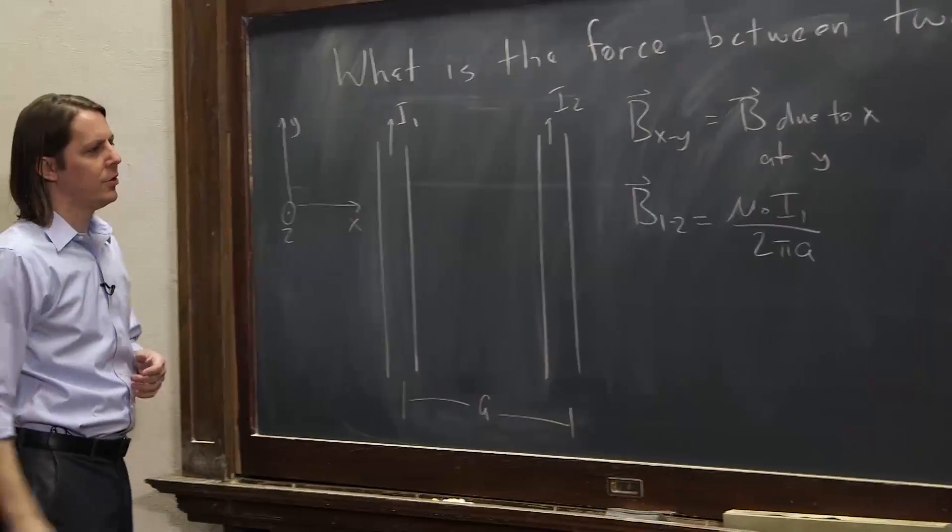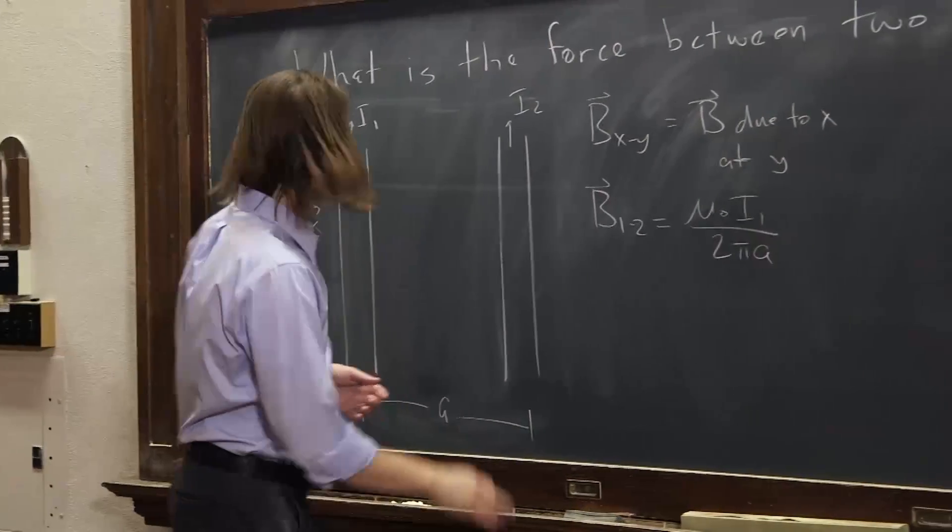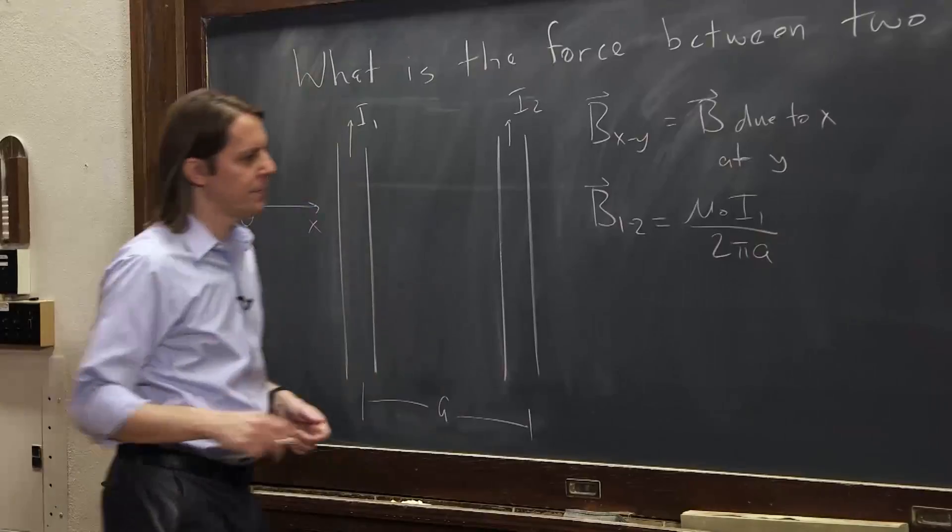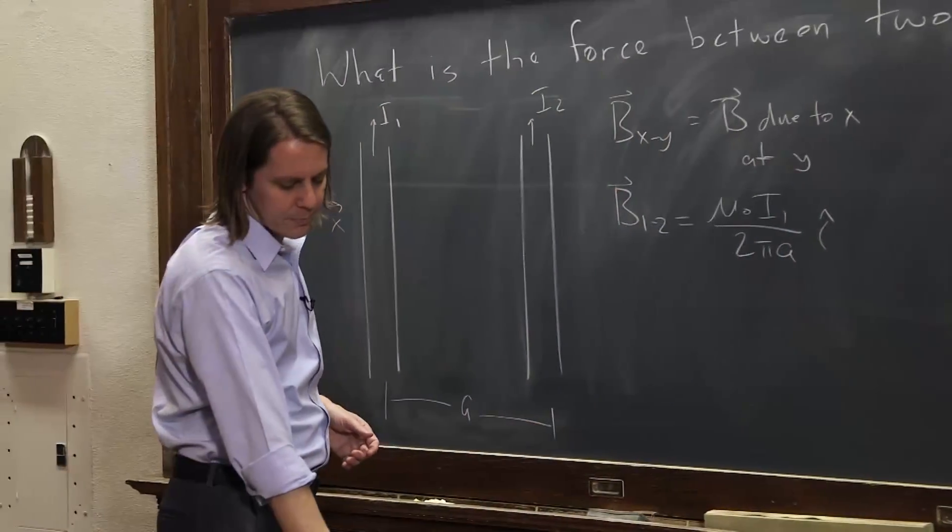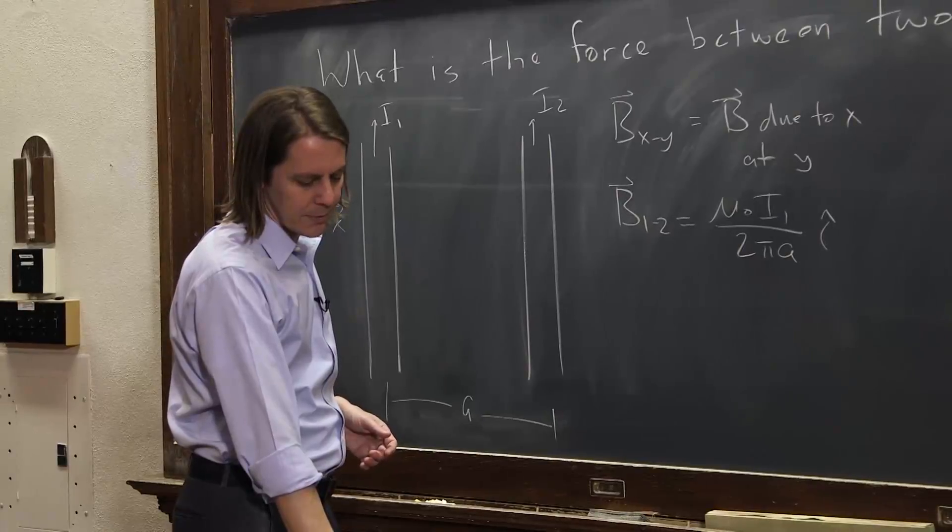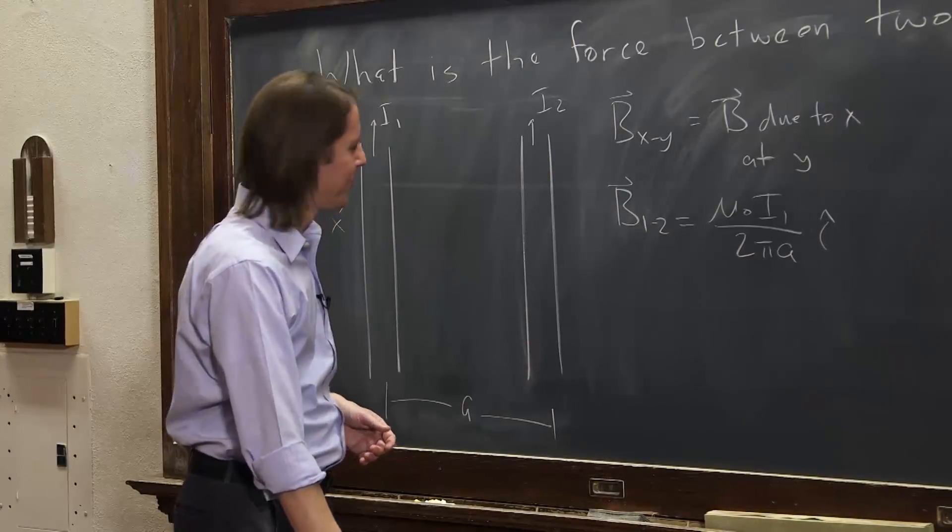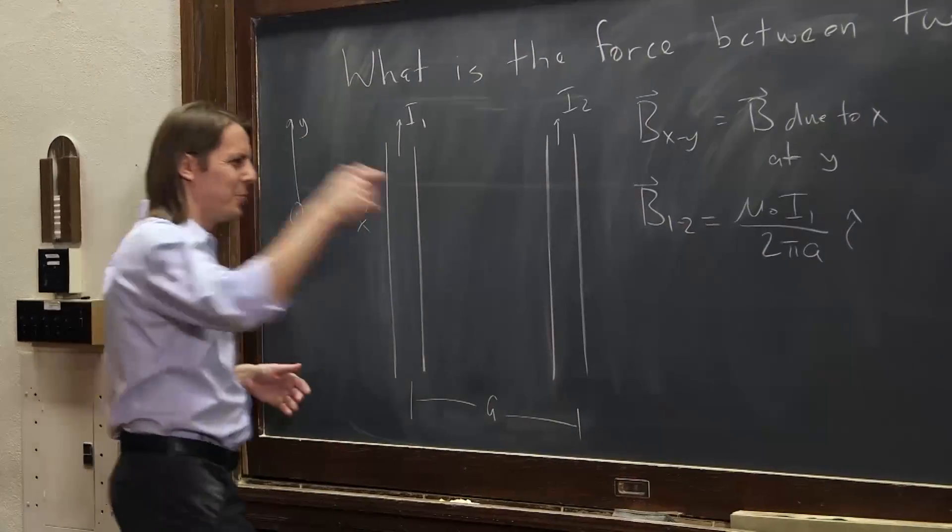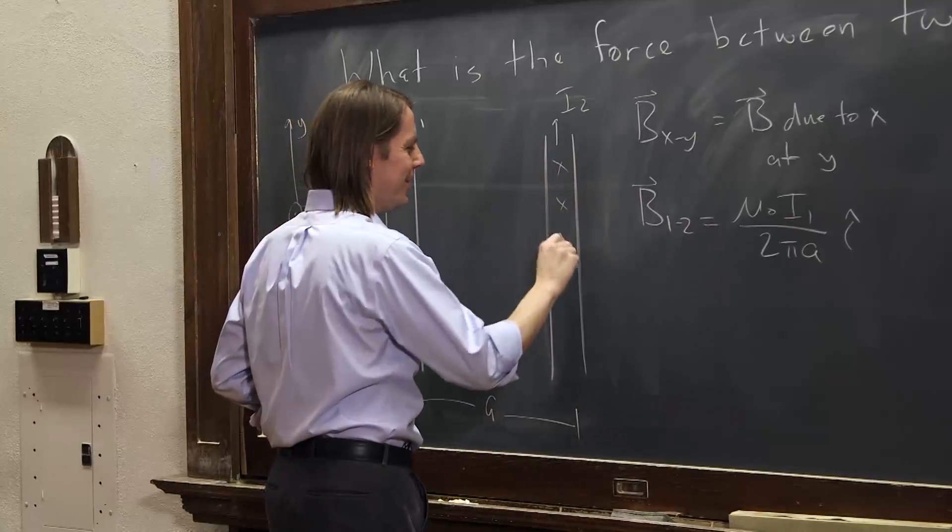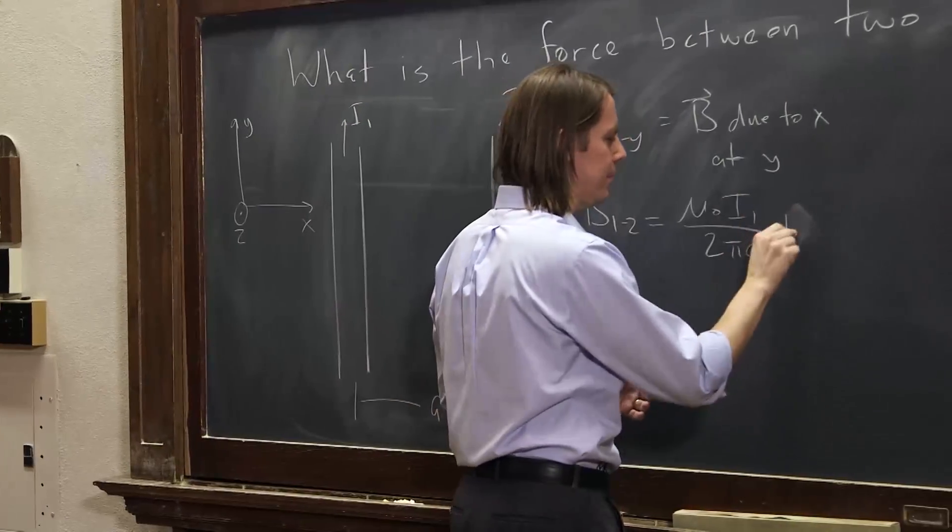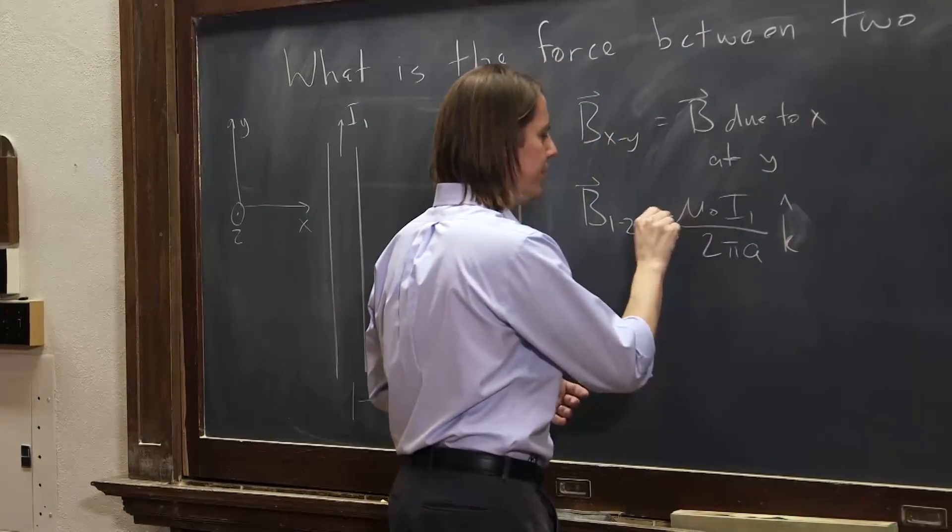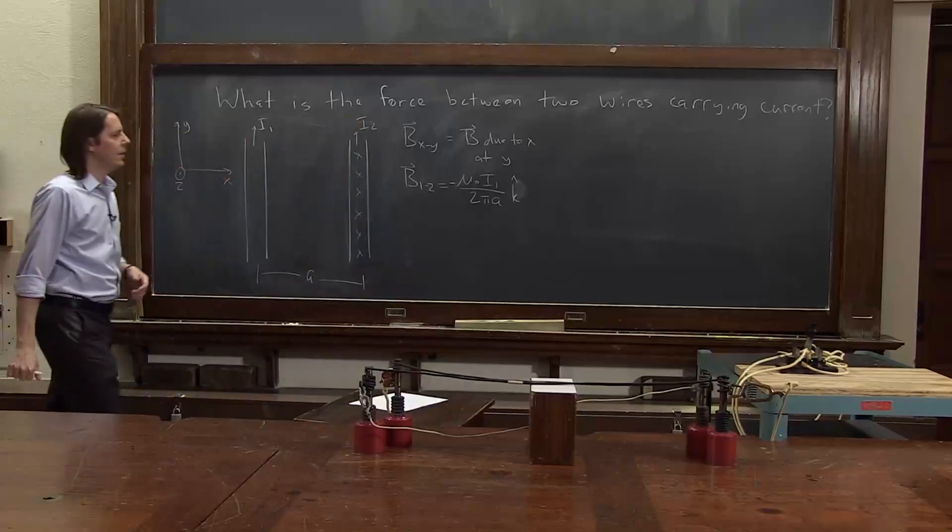So this one is in the i-hat, I'm sorry, i-hat direction, x-axis. Sorry, this one is going into the board. Let's draw the vectors so that I can catch up. Here we go. Into the board, and it's in the negative k-hat direction. There we go. That's what I meant.